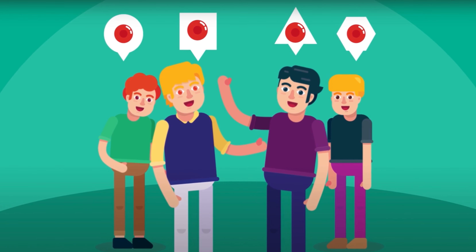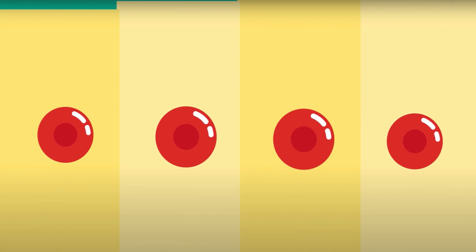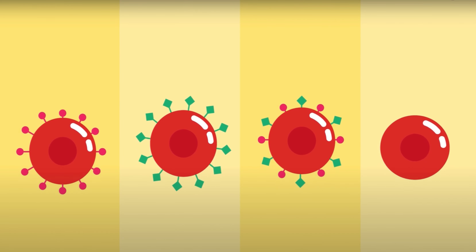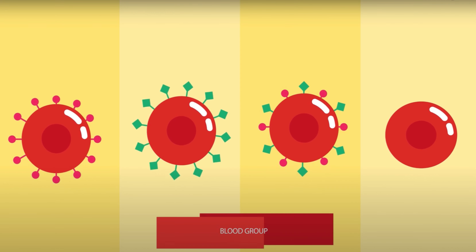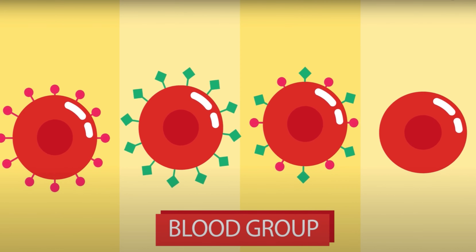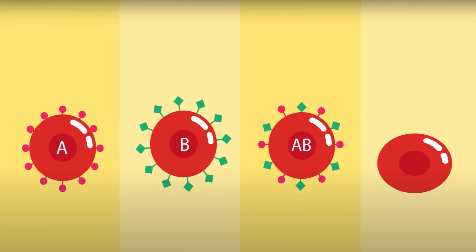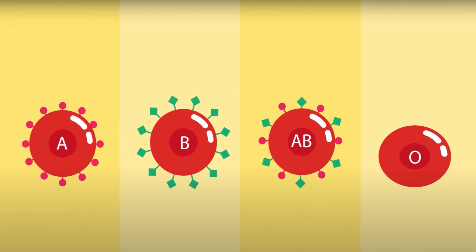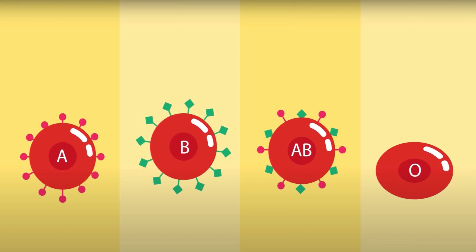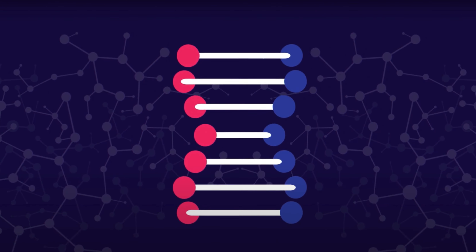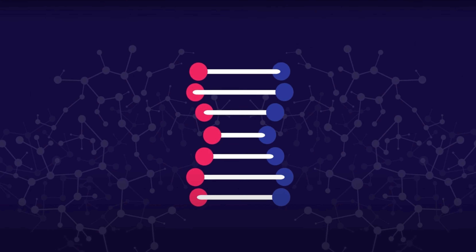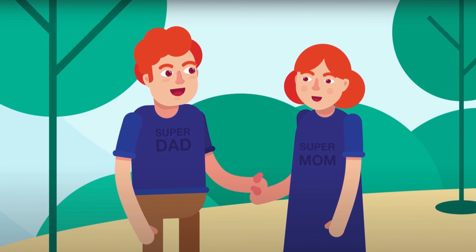We can differentiate from one individual to another based on blood groups, which carry different specific antigens on the red blood cells. In fact, there are four types of blood groups: blood group A, blood group B, AB, and O. Blood groups are genetically inherited from parents, so the father and mother determine the blood groups of their children.